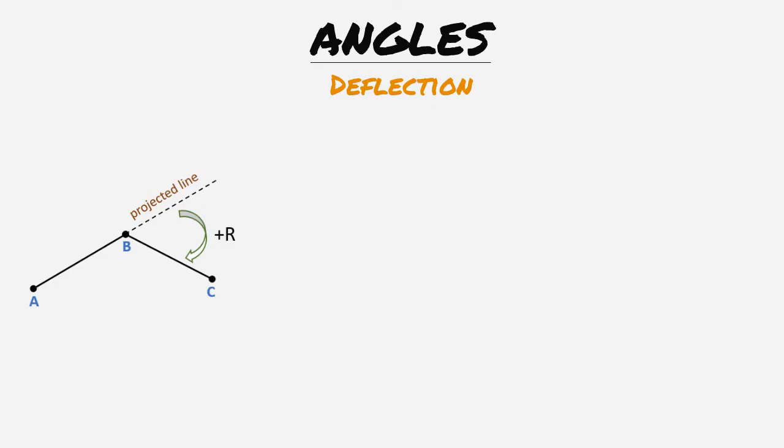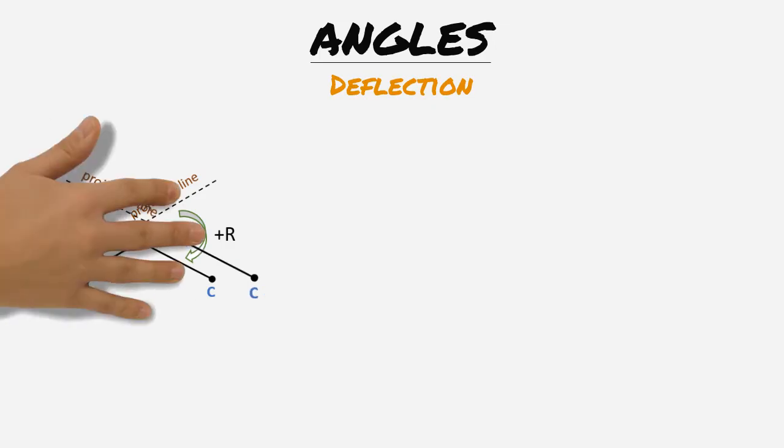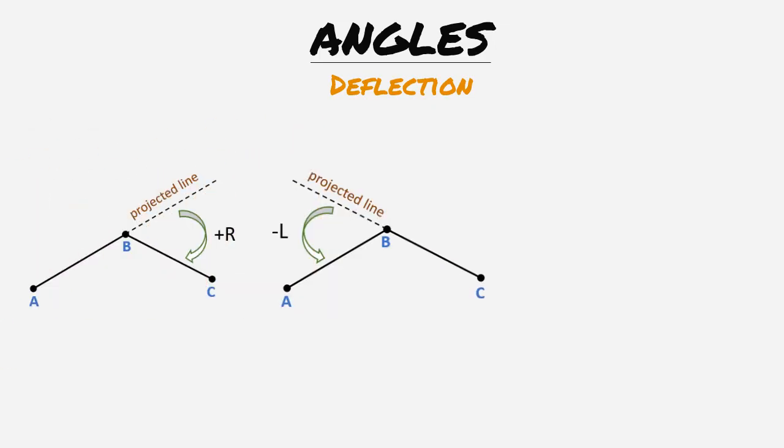This will be a right deflection angle. Now if we were to find the left deflection angle we would project a line from line CB. Then the deflection angle will be measured to the left towards line BA. Please note that deflection angles will always be less than 180 degrees.